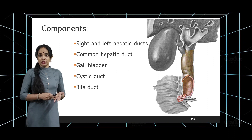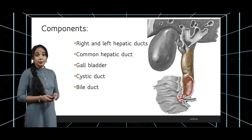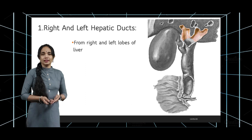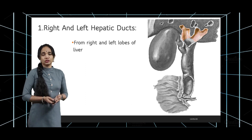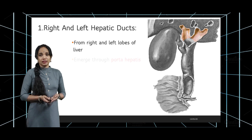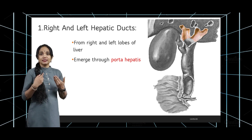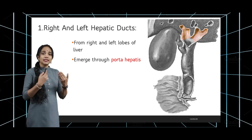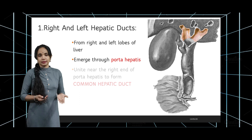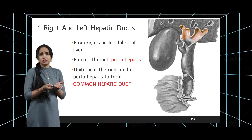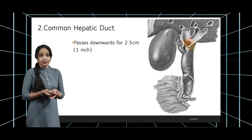The common hepatic duct when it joins with the cystic duct results in what is called the common bile duct, and that is what enters into the second part of the duodenum. The right and left hepatic ducts start from the right and left lobes of the liver and emerge through the porta hepatis, which is a region on the undersurface of the liver — something like the hilum of the liver — where structures enter as well as leave the liver. After leaving the porta hepatis, the two ducts almost immediately fuse to form the common hepatic duct.